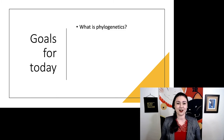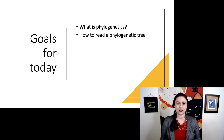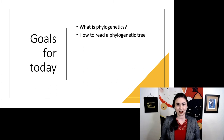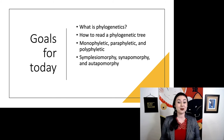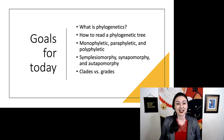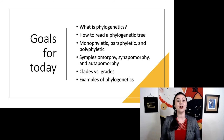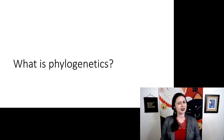We're going to start off talking about what phylogenetics is in the first place. Then we'll go over how to read these trees, because it's important that we be able to interpret them correctly. Then there are a bunch of specific terminology — monophyletic, paraphyletic, and polyphyletic — as well as plesiomorphies, apomorphies, and synapomorphies. Then we'll discuss the difference between clades and grades, and round it all out with a couple of different examples.